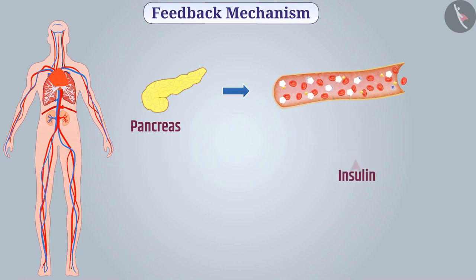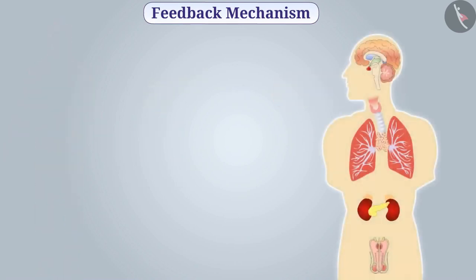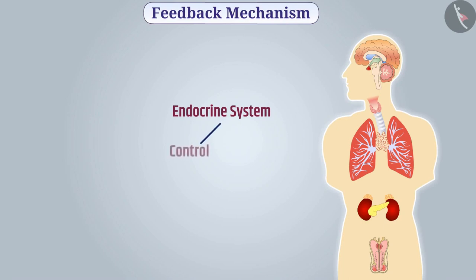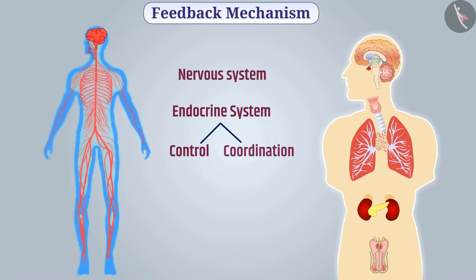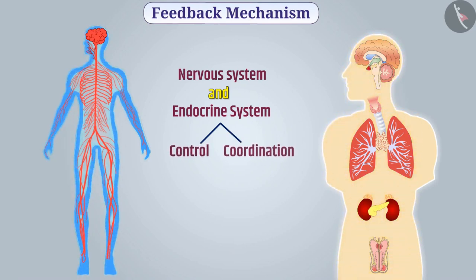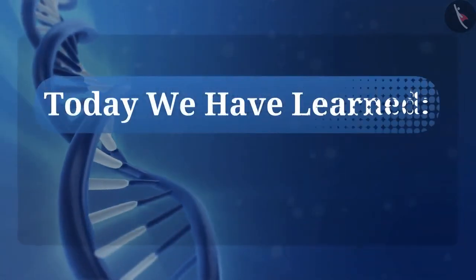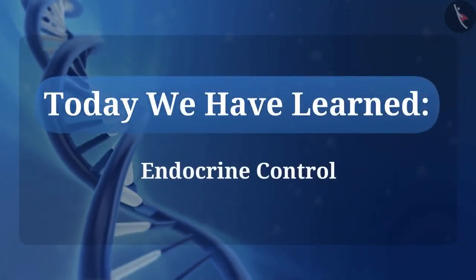Insulin helps in controlling sugar level in the blood. The endocrine system also assists in control and coordination of the body. Therefore, the nervous system and the endocrine system together perform the function of control and coordination in the body.